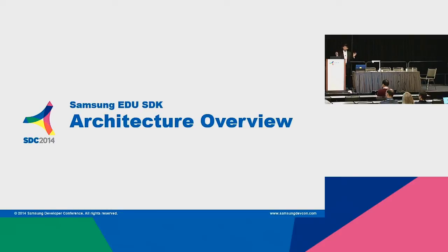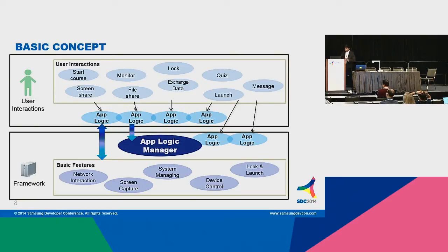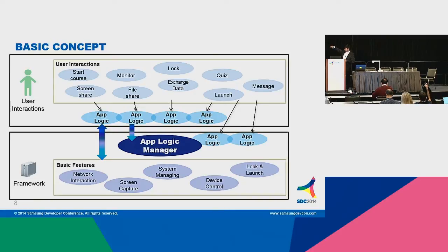Now let's see the architecture overview. Starting with the basic concept — typical user interactions happen on top: the teacher can start a course, screen sharing can happen, monitoring activities showing what students are doing, sharing files, text messaging, and running quizzes. These are all typical user interactions in a mobile classroom. The bottom part is the framework — this has network interaction, screen capture, and other features already built in. This SDK already has all these features, and this framework is sufficient to achieve all user interactions.